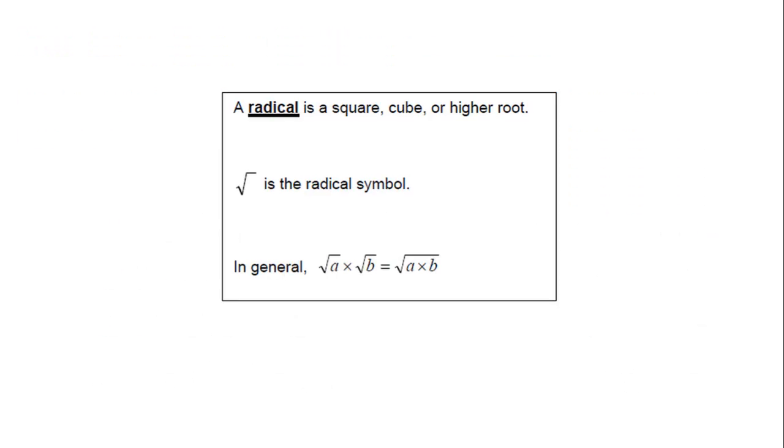So a radical is a square, cube, or higher root. The square root is the radical symbol. √A times √B, like we saw in the investigation, equals the square root of A times B. I explained in class, this is really what we've seen before with exponents.